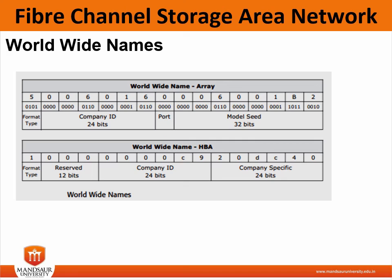For the HBA, the company-specific field is 24 bits and the company ID is also 24 bits. There is also a reserved 12-bit field and a 4-bit format type field. This gives the Worldwide Name structure for the HBA. These are the two configurations — one for the array and one for the HBA — as shown here.